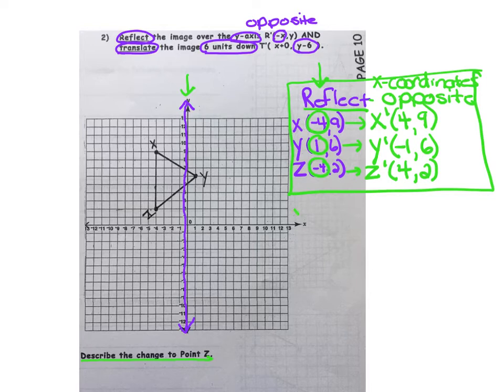Now we're going to take x prime, y prime, and z prime, and we are going to slide those points down 6 units. That's going to affect the y-coordinate. So we know we're going to subtract 6, or take away 6, from each of those coordinates.